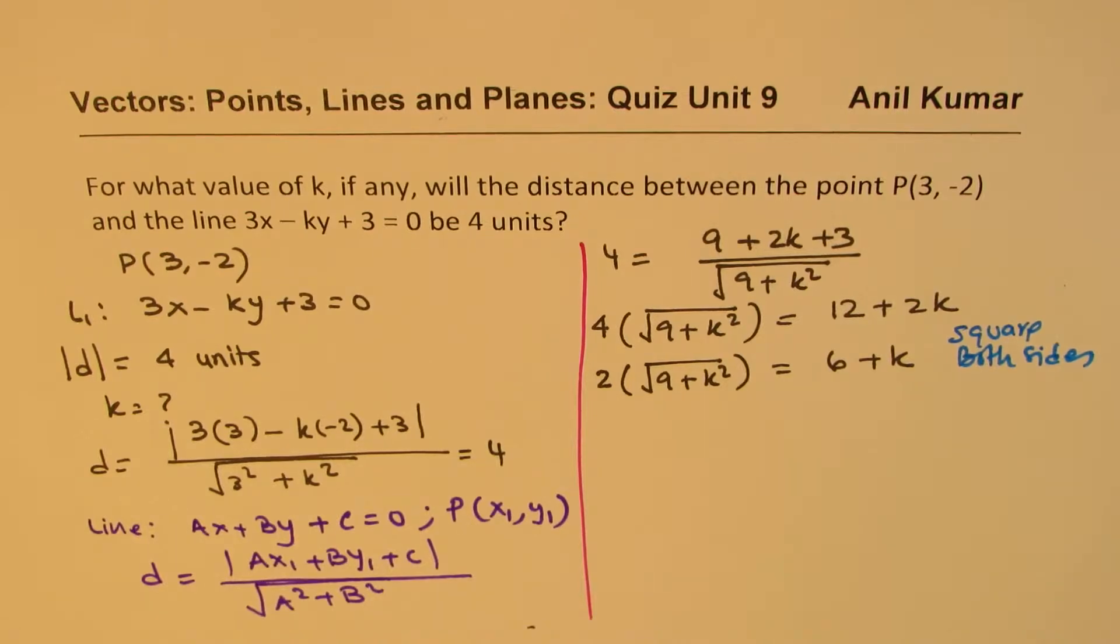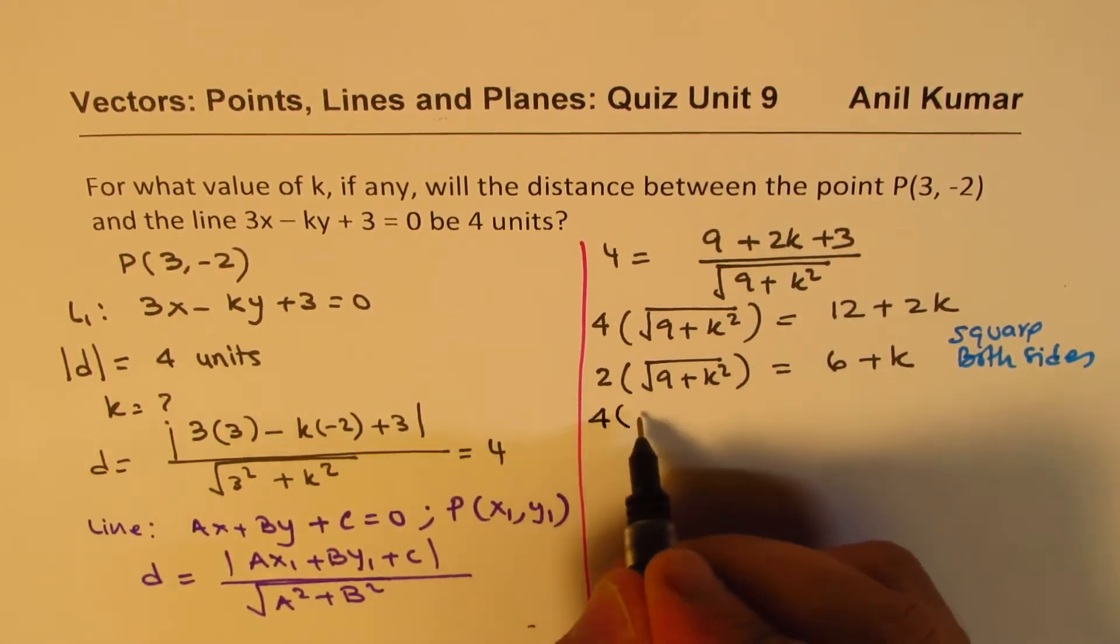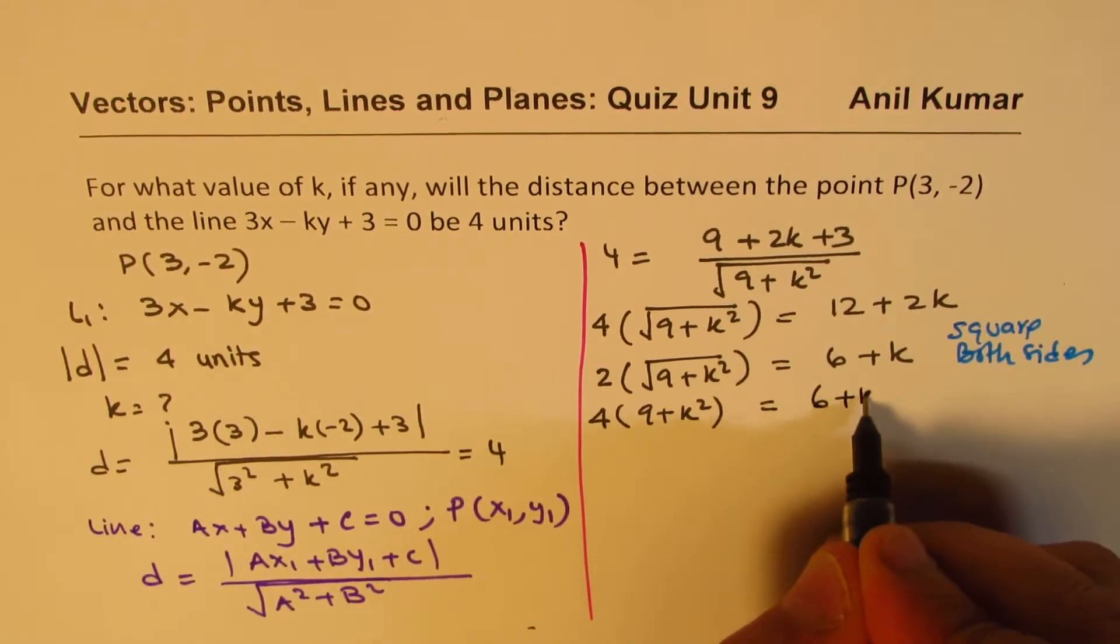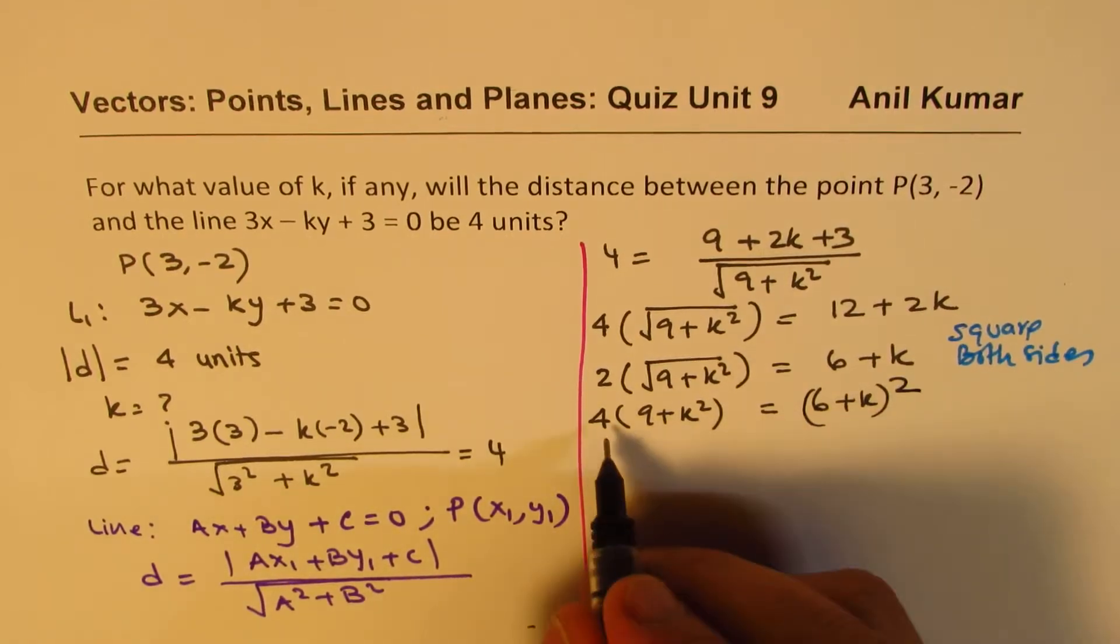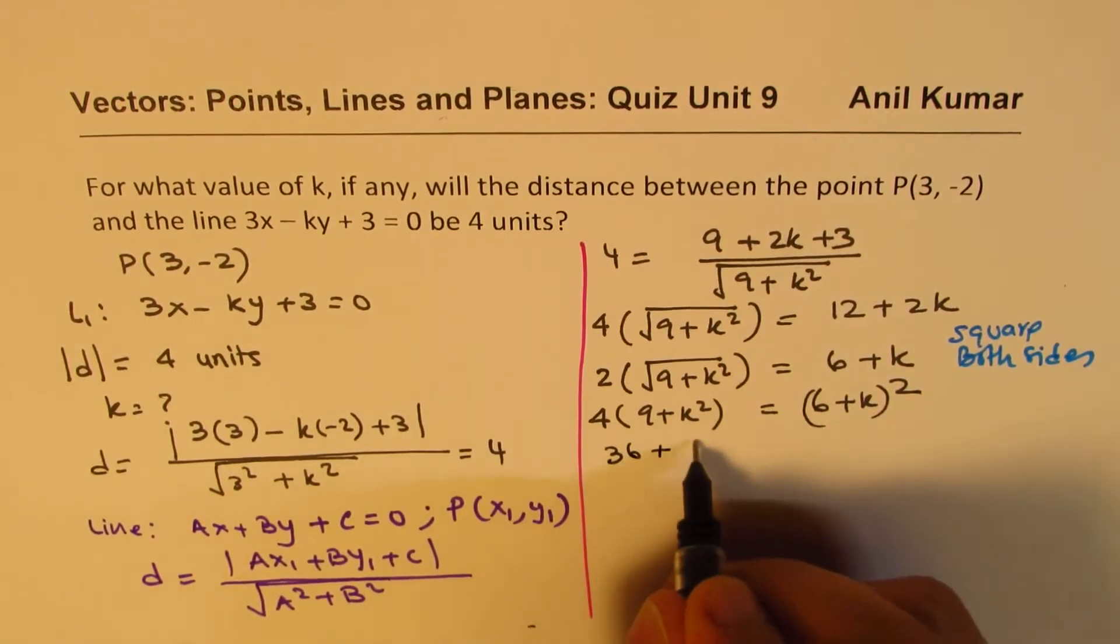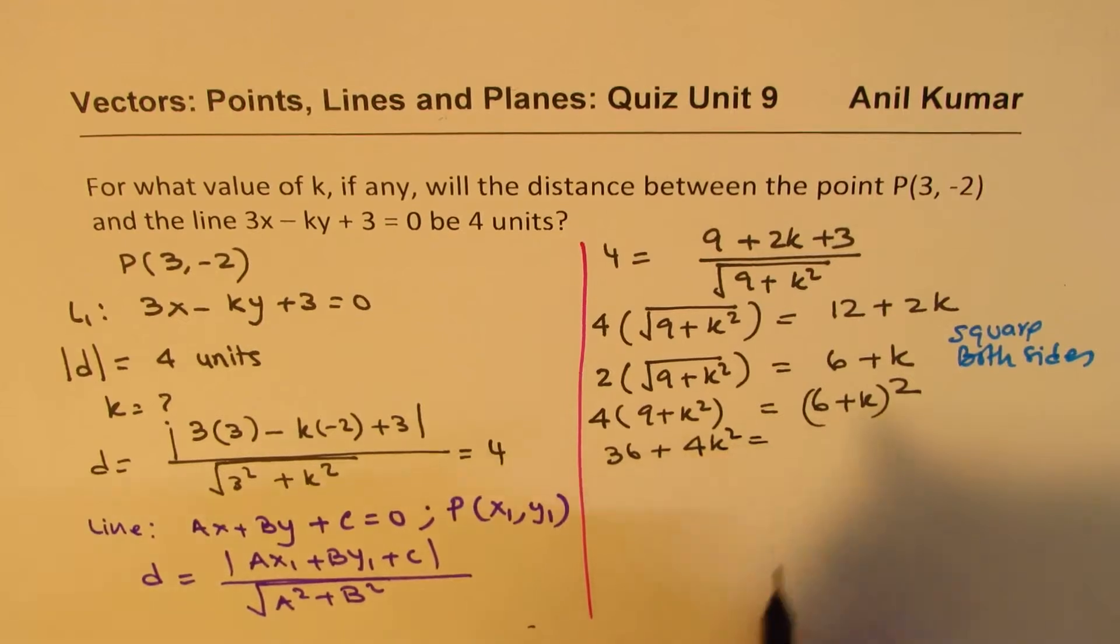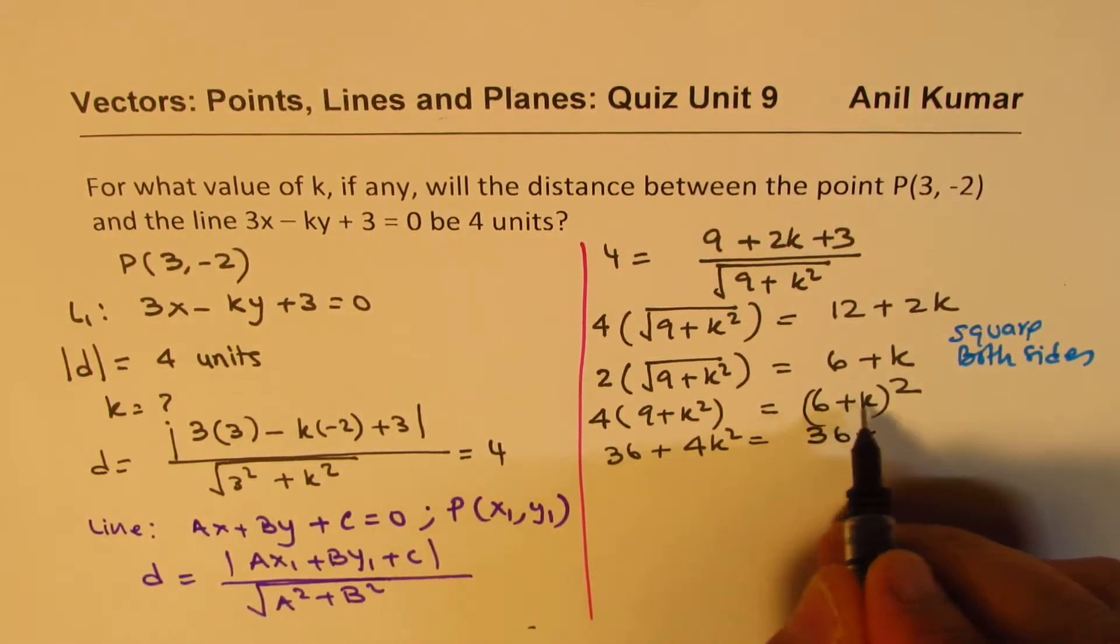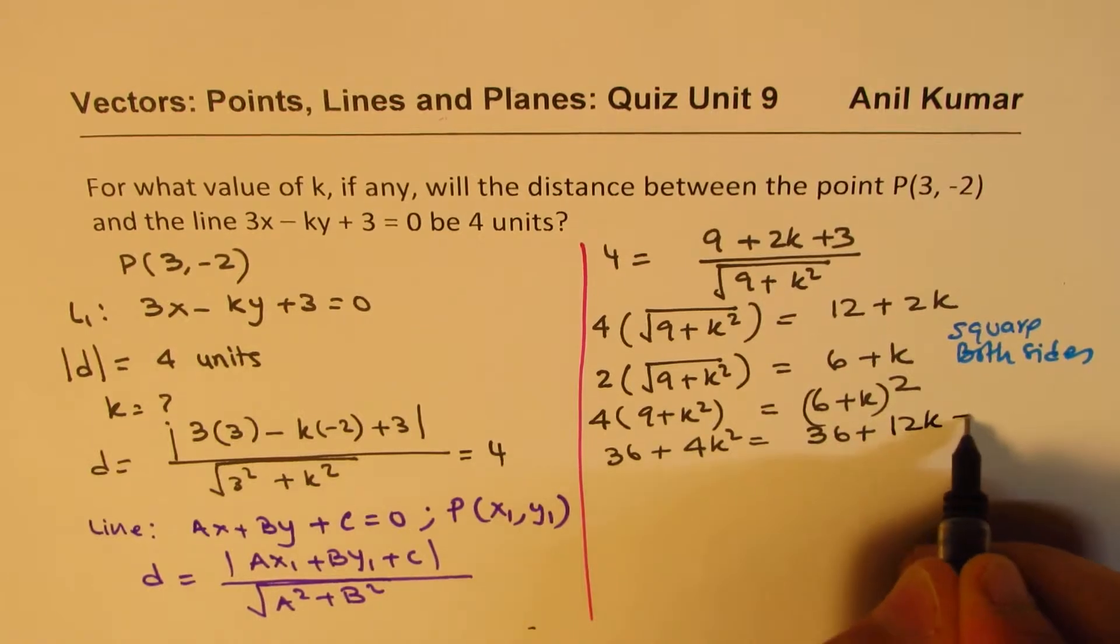So we get 4(9 + k²) = (6 + k)². That gives us 36 + 4k² = 36 + 12k + k².